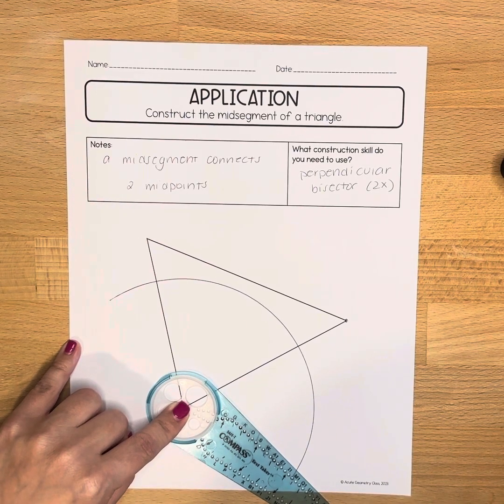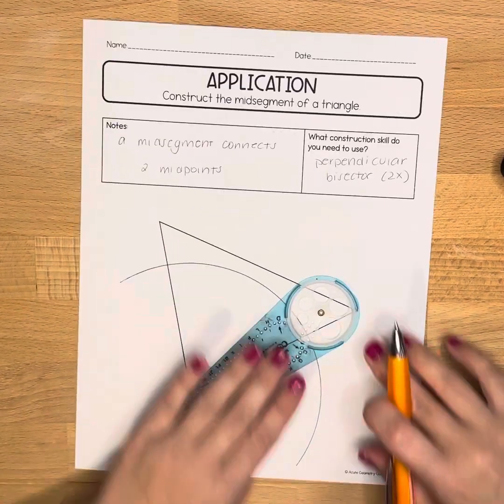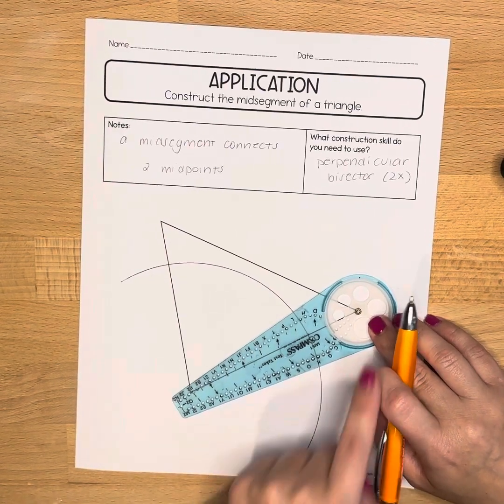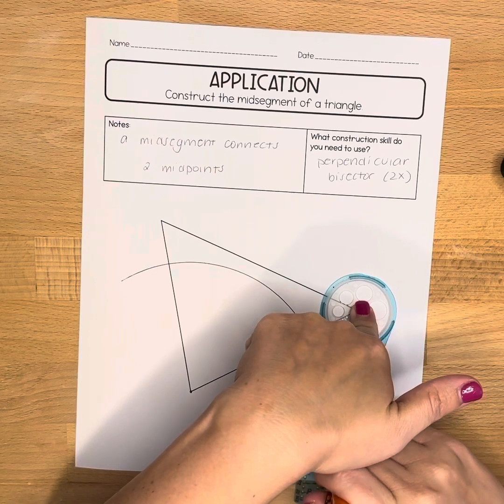I'm going to draw in an arc that's more than halfway across. I'm going to use that same measurement to make an arc going the opposite way.